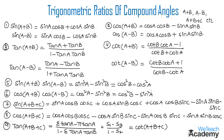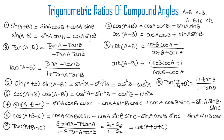We also have the formula tan(π/4 + θ), that is tan 45 degrees plus theta, which is equal to 1 plus tan theta divided by 1 minus tan theta. Make a note of all these formulas because we are going to use them in further videos for solving examples on trigonometry. These are the formulas of trigonometric ratios under compound angles.